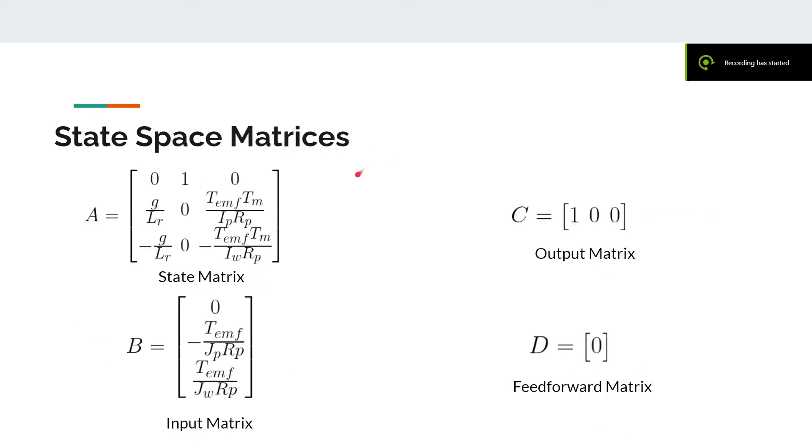So with the differential equations that we found on the previous page, we were able to find the state matrix A right here. Our input matrix B. And this is our output matrix C. And our feed forward gain matrix is 0.